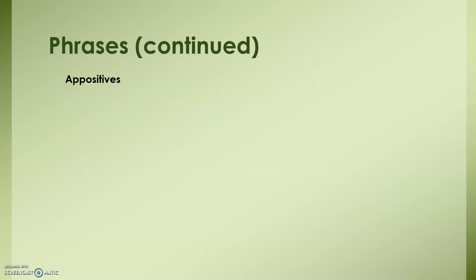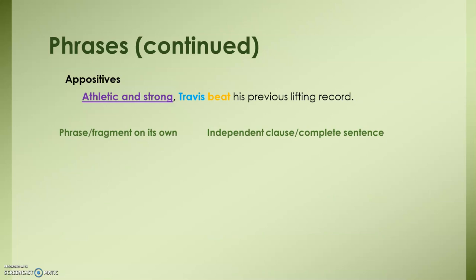Let's look at an example of a phrase using appositives. Appositives describe the noun that's closest to them. 'Athletic and strong, [comma] Travis beat his previous lifting record.' Here, on the left, we have a phrase that cannot stand on its own. On the right, we have our subject, Travis, our verb, beat, and a complete thought — an independent sentence or clause on its own — which is again why we split the two with a comma.